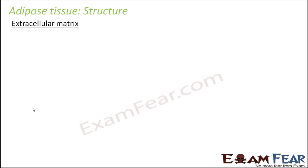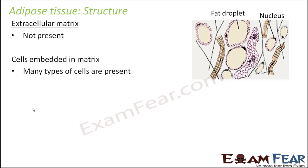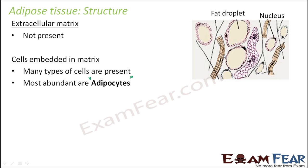Talking about the structure of adipose tissue, the extracellular matrix is absent here. The cells forming adipose tissue — the most abundant are adipocytes. For bone it is osteocytes, for cartilage it is chondrocytes, and for adipose tissue it is adipocytes. Obesity occurs — too much increase in weight — when the number of adipocytes increases beyond the desired number. Excess nutrients which are not used immediately are converted into fats and stored in this type of tissue.